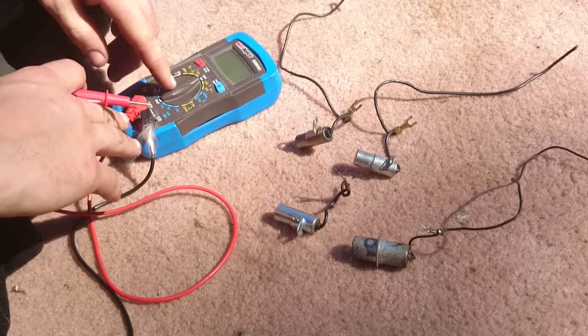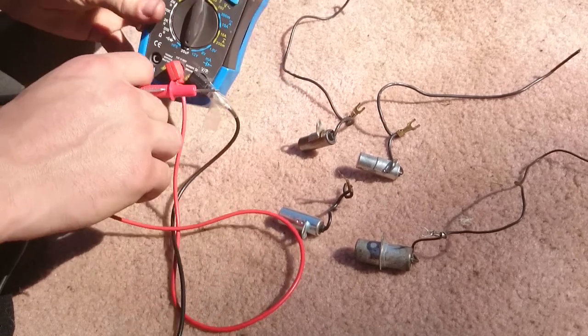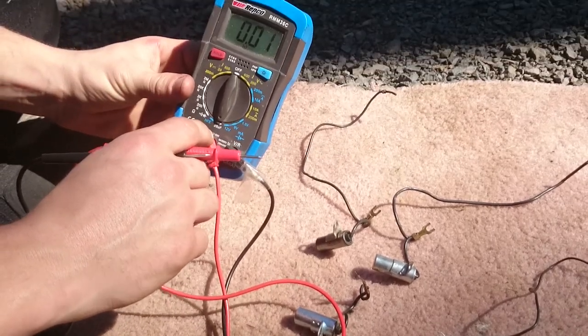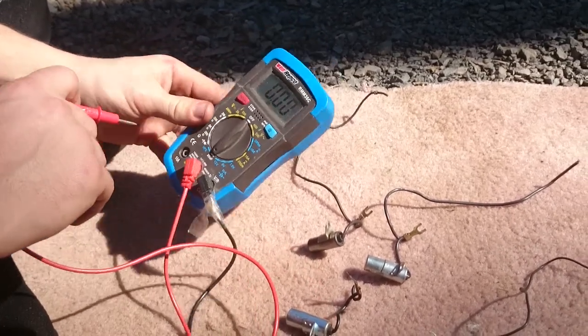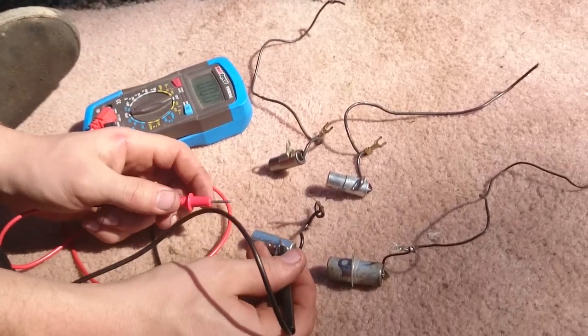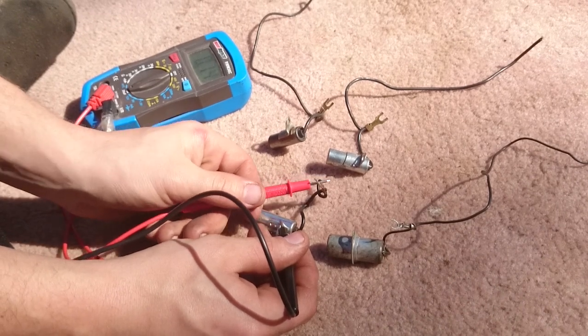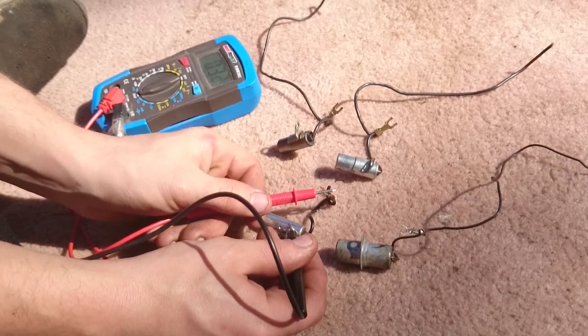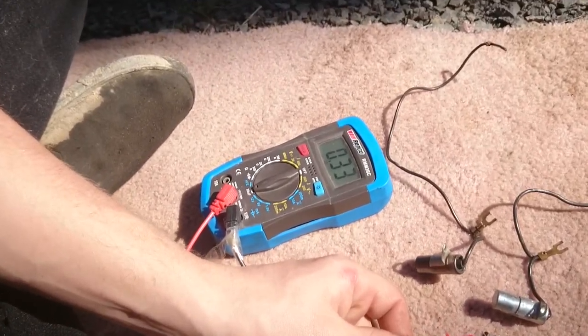First thing we're going to test is the capacitance. So we're going to put our meter to 20UF here. Your meter may not have a capacitance reading which could be a problem, but if you put the black terminal on the condenser and the red on the lead you should get a reading here. You can see this one is 0.33 or 0.32.